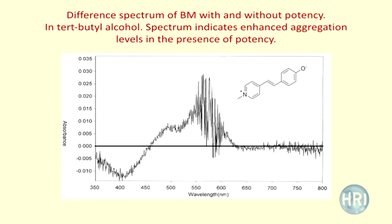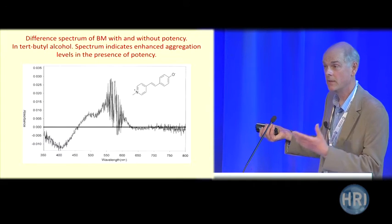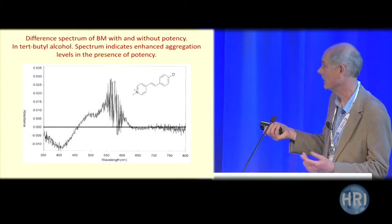In distinction to the first two dyes, this dye is also zwitterionic in the ground state, but it's not showing a decrease at the red end — it's showing an increase at the red end and a decrease at the blue end. In other words, potencies are causing this dye to aggregate more, in the opposite direction to the first two dyes.